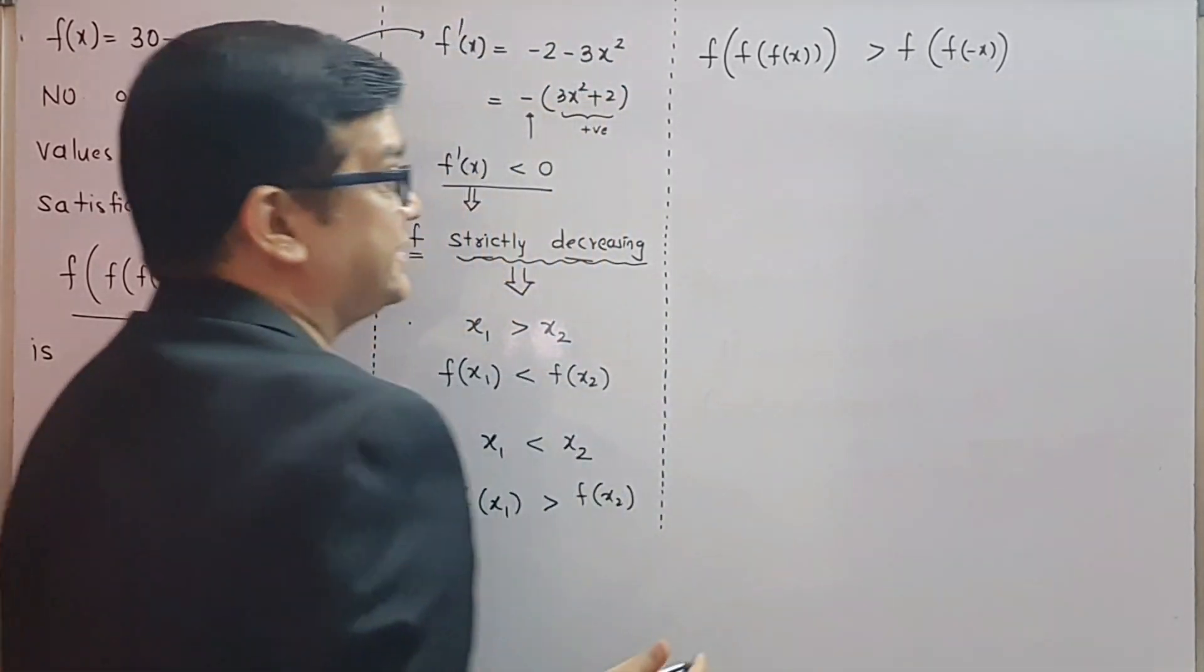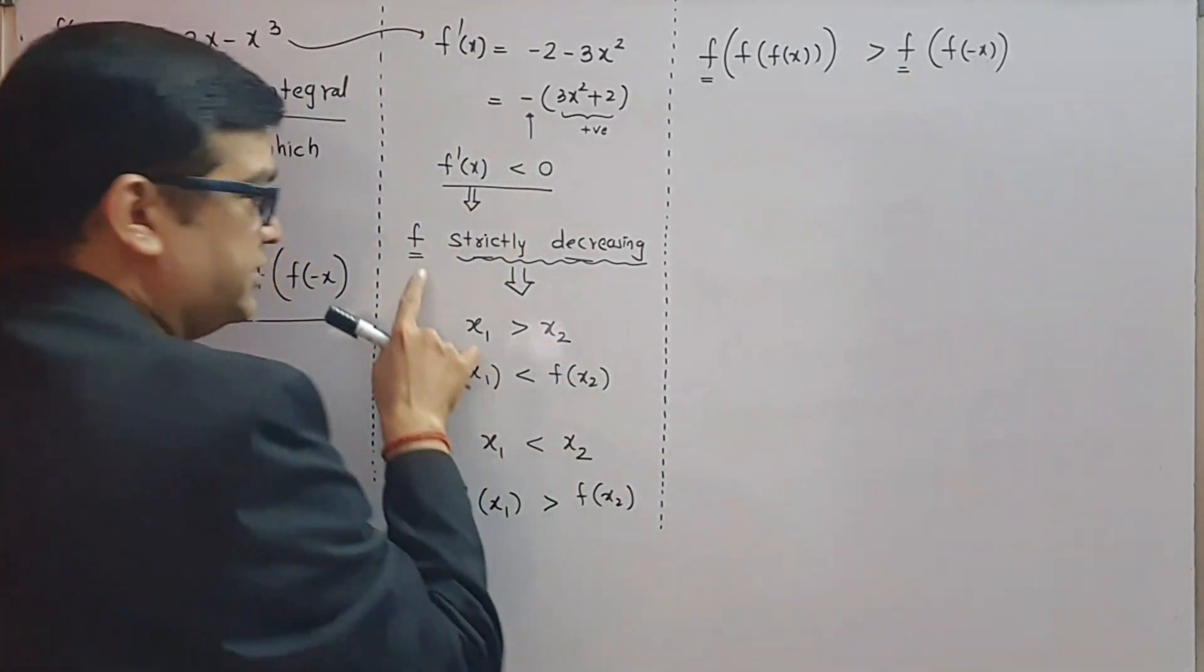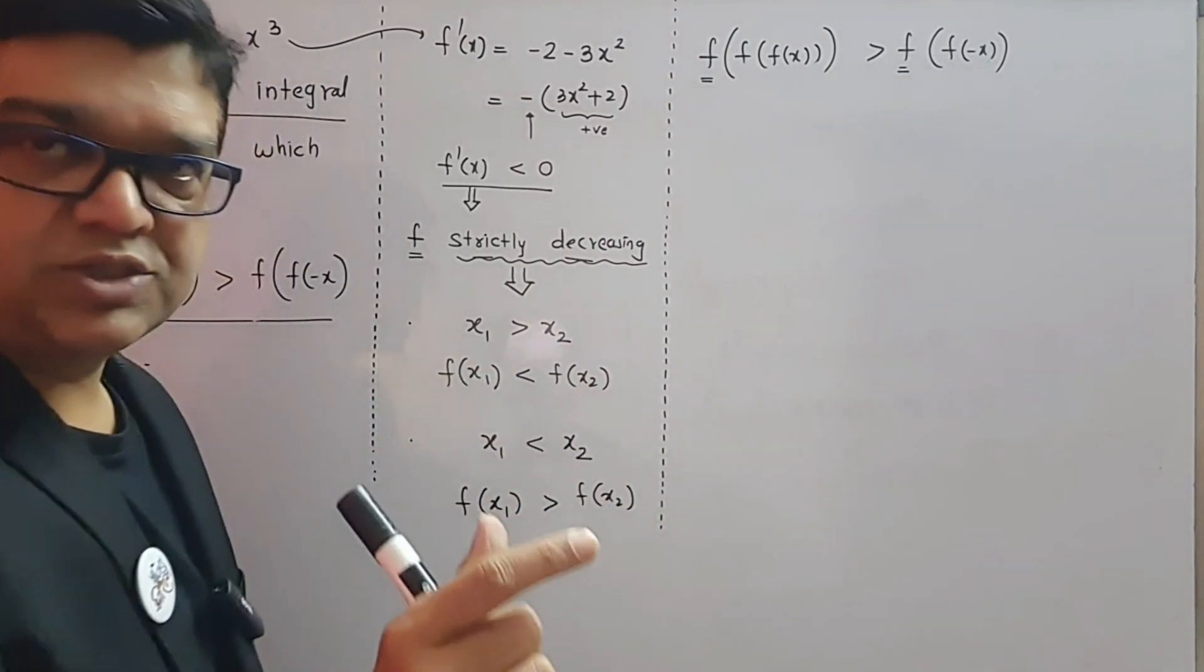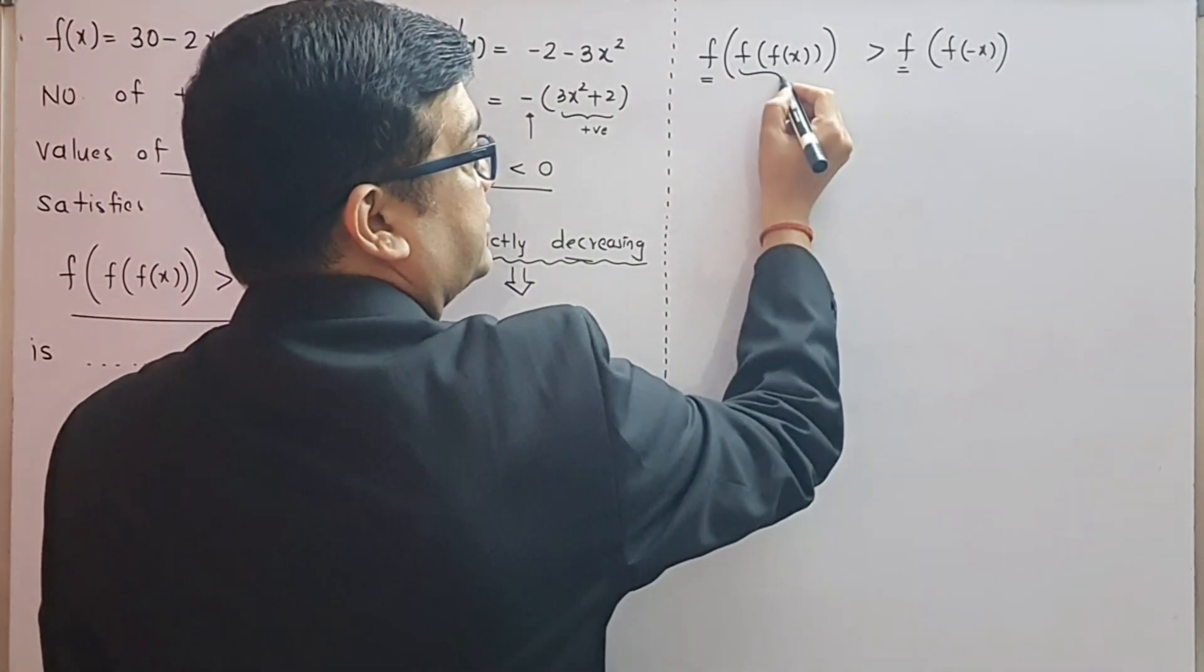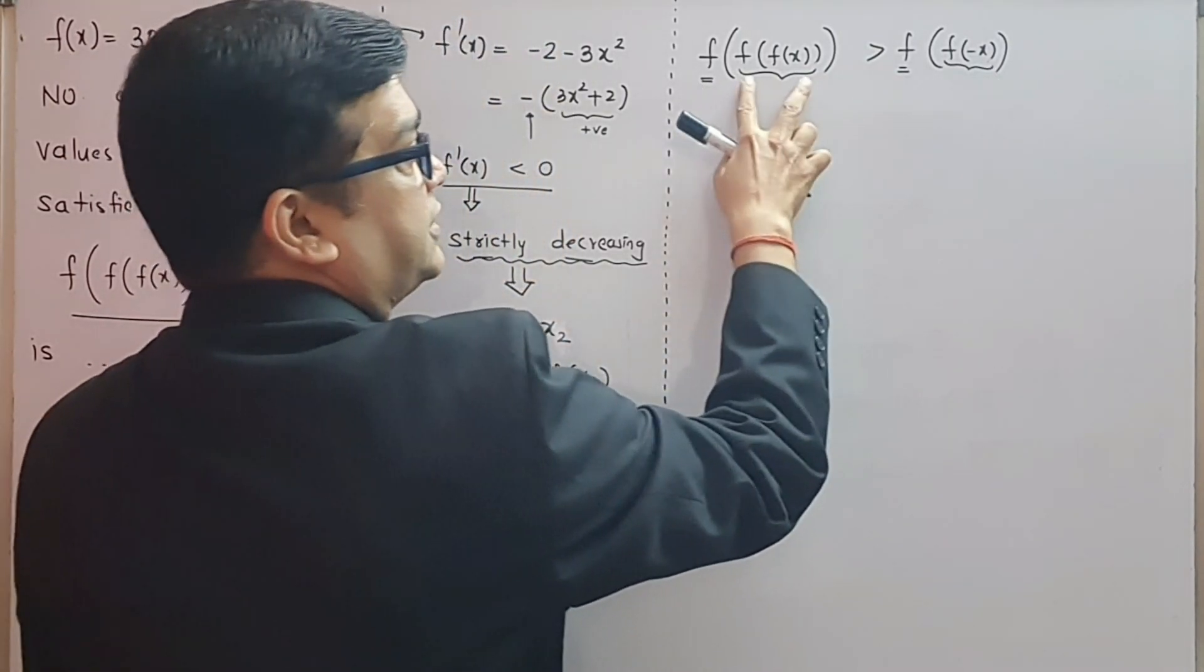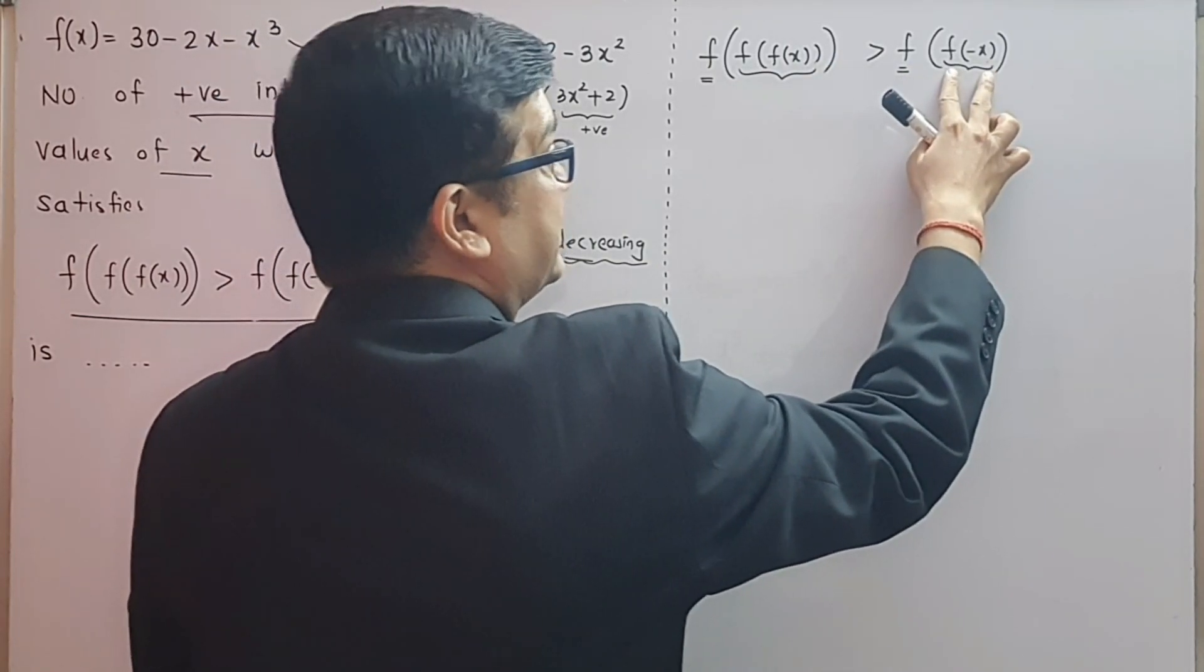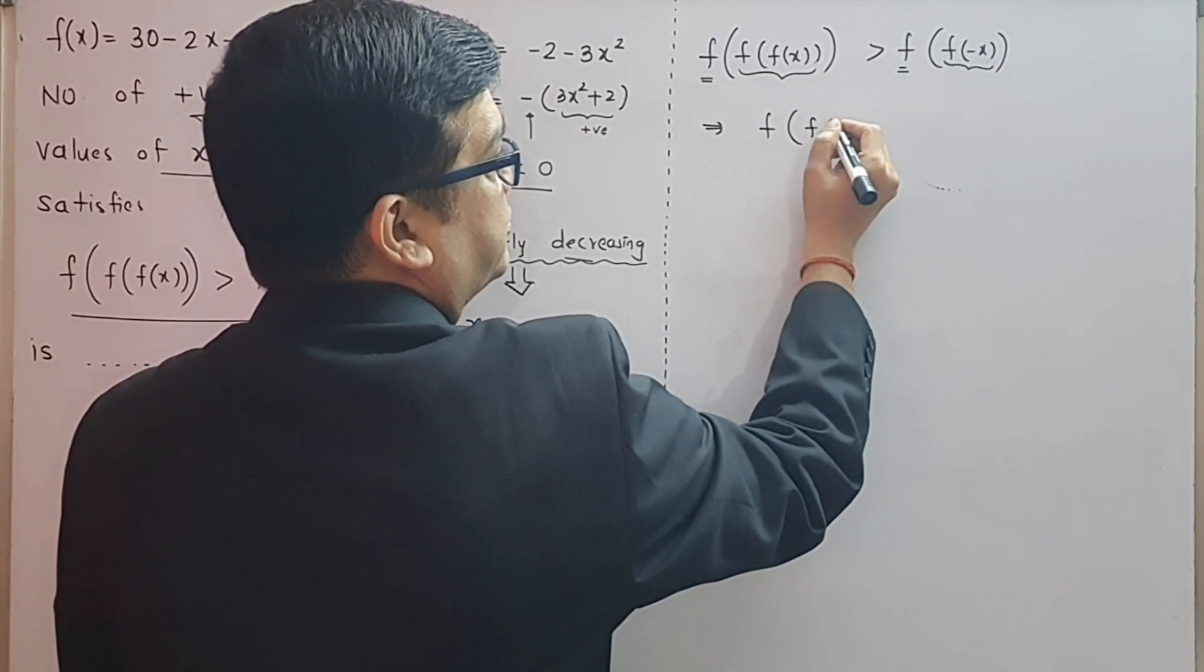So this is the first step towards tackling questions involving inequality and composition of function. Now let us focus on this given inequality of composition of function: f(f(f(x))) > f(f(-x)). Now look at this outside function f. We understand that this function f is strictly decreasing function.